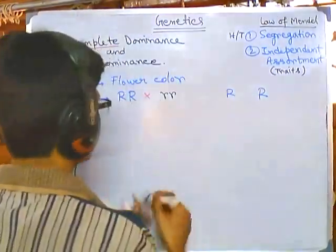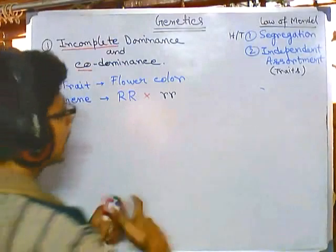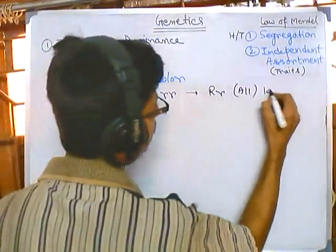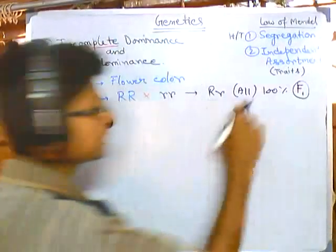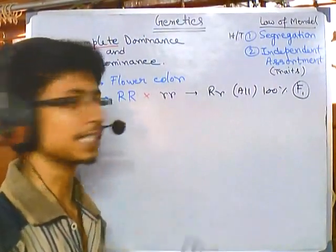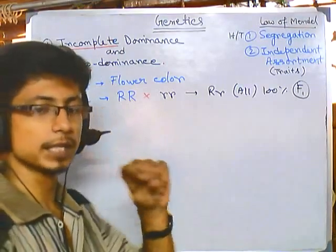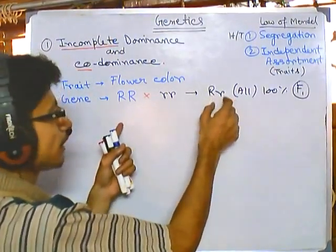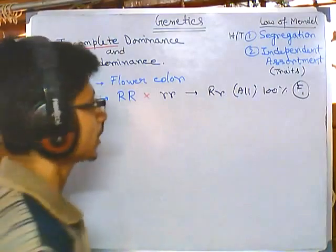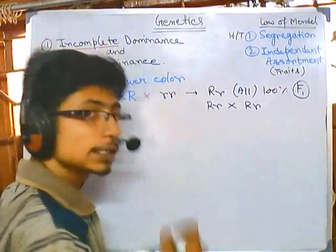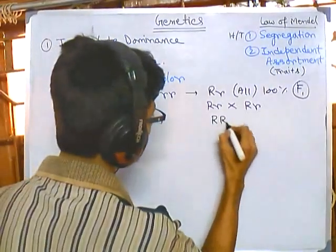In the parental generation, crossing RR with rr gives us all Rr in the F1 generation — 100% of F1 offspring are heterozygous Rr. Capital RR is homozygous, small rr is homozygous, and Rr is heterozygous. In the case of heterozygous, the dominant trait will express its phenotype. If we then self or cross F1 individuals, we get three genotypic expressions.